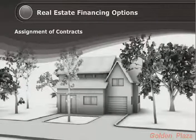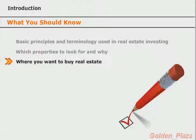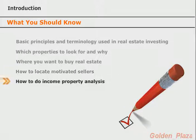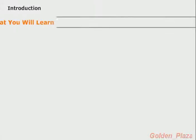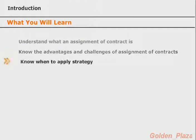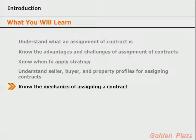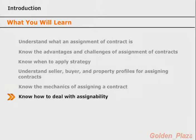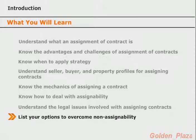Before you start this lesson, make sure that you know the following basic principles and terminology used in real estate investing: which properties to look for and why, where you want to buy real estate, how to locate motivated sellers, how to do income property analysis, and the basics of investment strategies. After you diligently apply all the principles and concepts in this lesson, you should be able to understand what an assignment of contract is, know its advantages and challenges, know when to apply the strategy, understand seller, buyer, and property profiles, know the mechanics of assigning a contract, and understand the legal issues involved.